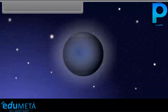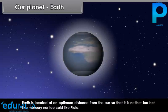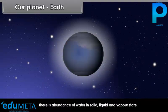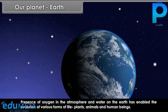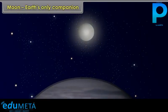Earth is located at an optimum distance from the Sun, so that it is neither too hot like Mercury, nor too cold like Pluto. Extremes of temperature between day and night are reduced because of the presence of the atmosphere. There is abundance of water in solid, liquid and vapour state. The presence of oxygen in the atmosphere and water on the Earth has enabled the evolution of various forms of life — plants, animals and human beings. Owing to the abundance of water, the planet appears blue from space, and hence Earth got the name Blue Planet.